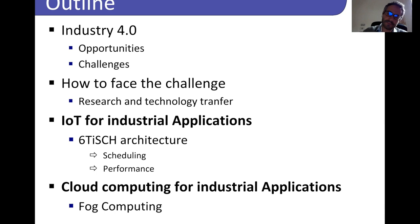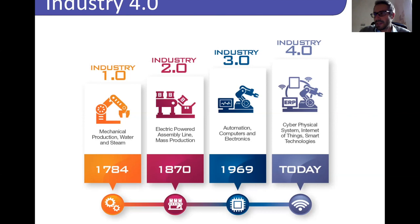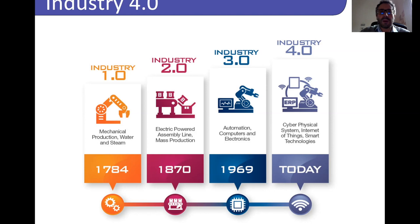So what is Industry 4.0? As the name and numbers suggest, Industry 4.0 is the fourth Industrial Revolution. It came after the first Industrial Revolution fueled by mechanical production powered by water and steam, followed by the second Industrial Revolution centered around electric-powered assembly lines that enabled mass production, and the third Industrial Revolution fueled by the introduction of automation, computers, and electronics in the production system.